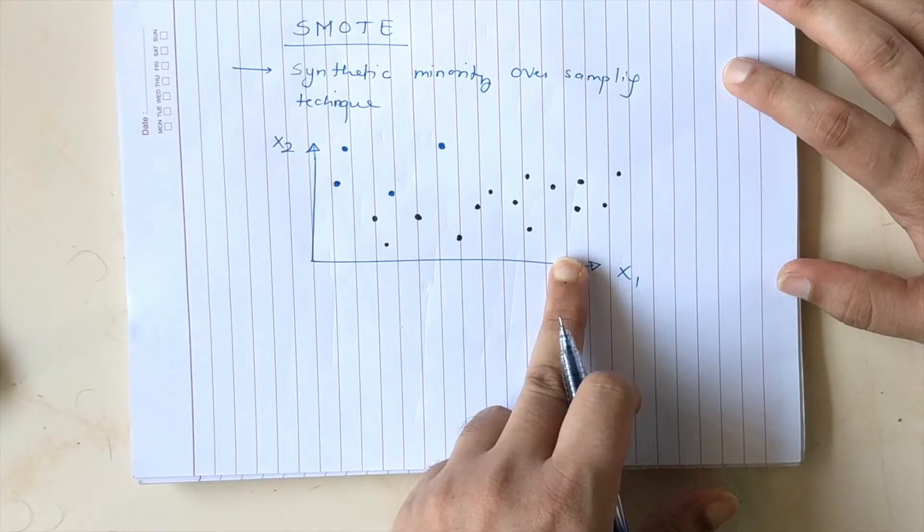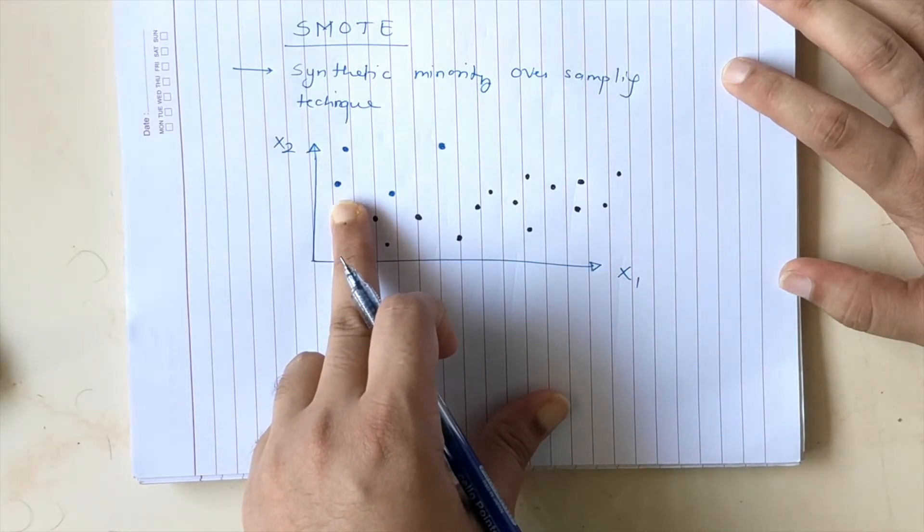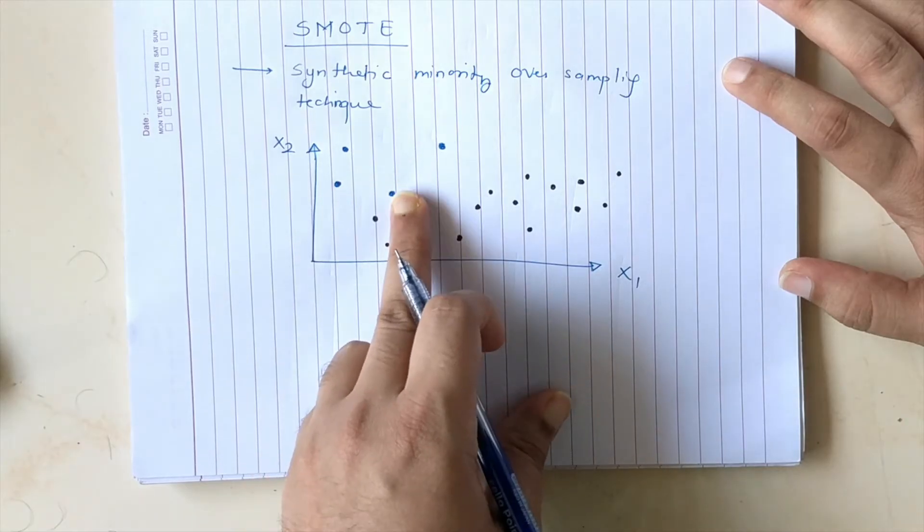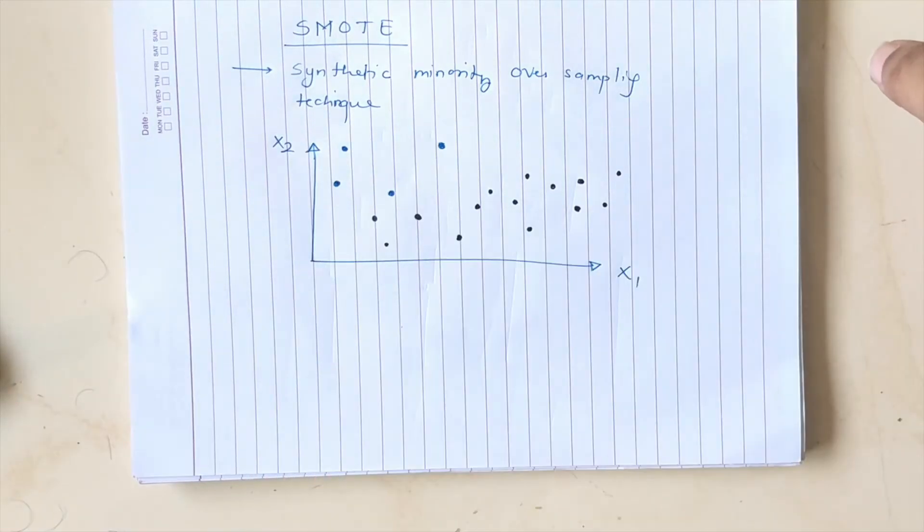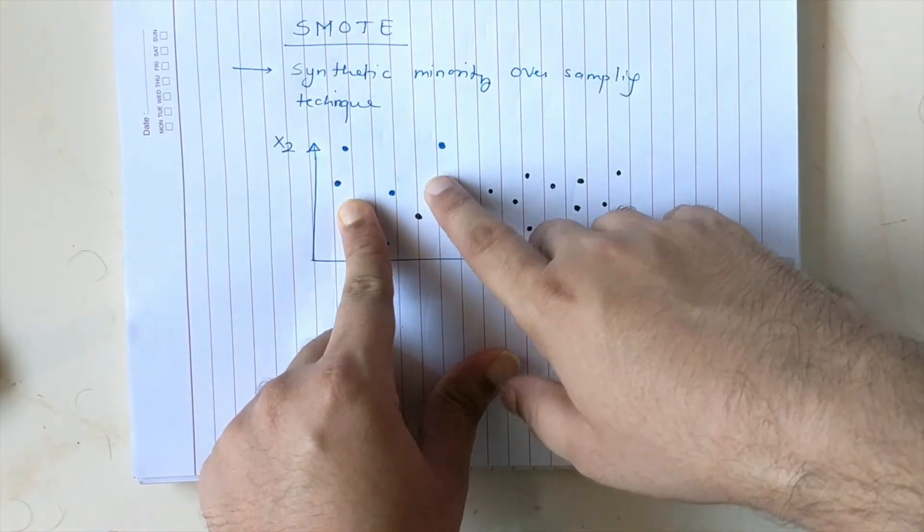Now rather than decreasing the black samples, I'll be increasing the blue samples which is my minority class samples by using SMOTE. How does this work is what I'll explain. So I'll magnify the minority class samples in the next sheet.